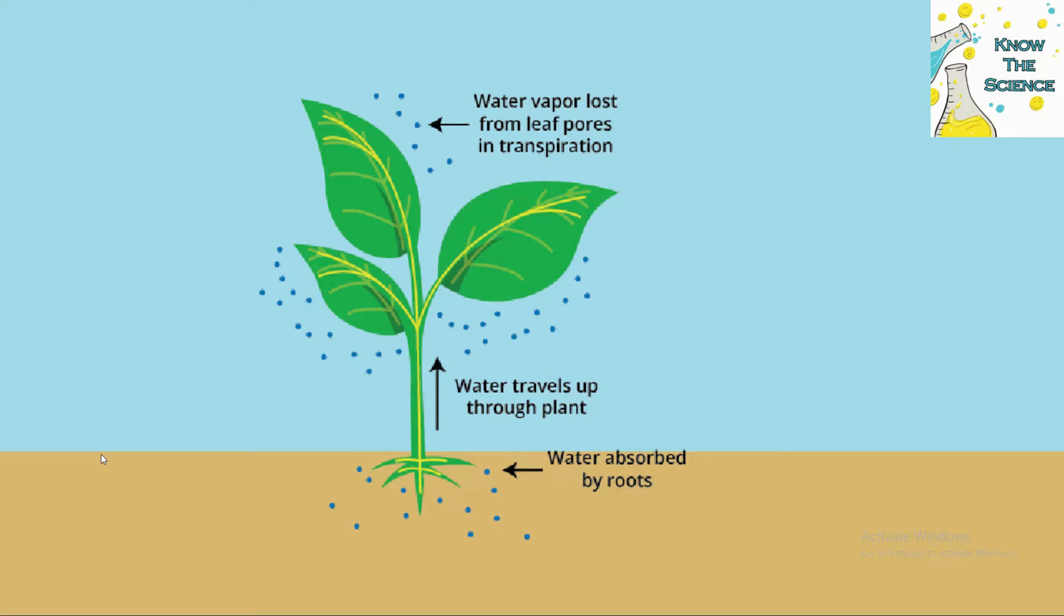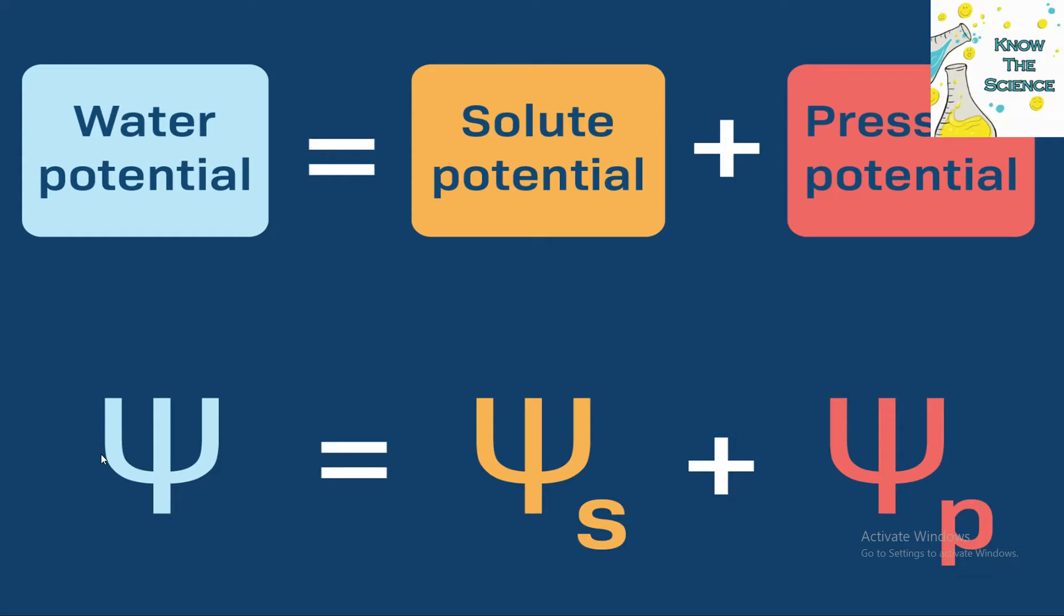Water potential is a crucial concept in plant physiology and ecology, describing the tendency of water to move from one area to another. It's represented by the Greek letter psi (Ψ) and is measured in units of pressure, typically bars or pascals.